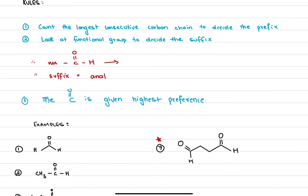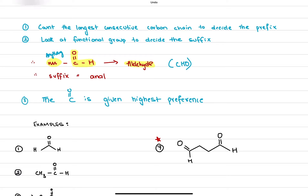How do we identify a molecule as an aldehyde? Very simply, if you see the COH group attached to a molecule, you can say that this is going to be an aldehyde. The zigzag indicates that you can have anything here — an alkyl group, a hydrogen, anything. If you have CHO attached in any molecule, that is an aldehyde. The suffix in the case of an aldehyde is '-al', so it is ethanal, propanal, butanal, pentanal, and so on.